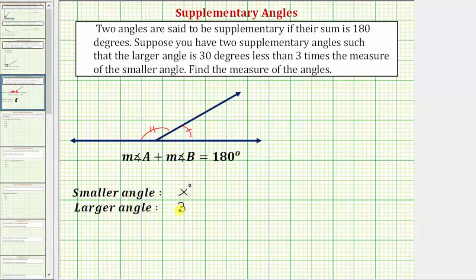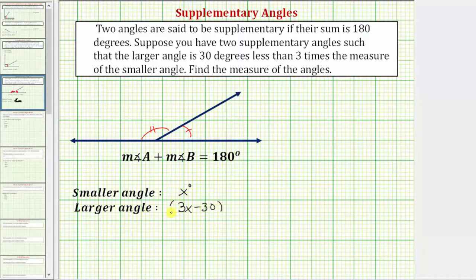Three times x would be 3x, but we want thirty less than 3x, and therefore the expression for the larger angle would be 3x minus 30 degrees. So the second angle is thirty degrees less than three times the measure of the first angle.